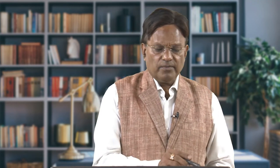GPS basically works by generating a pseudo random code — PRC for short. 'Pseudo' means false. This pseudo random code is a very complex signal, unique to each satellite. There are 24 satellites, so this code will be unique to each one, and all satellites are using the same frequency. This pseudo random code is economical to use compared to other methods.